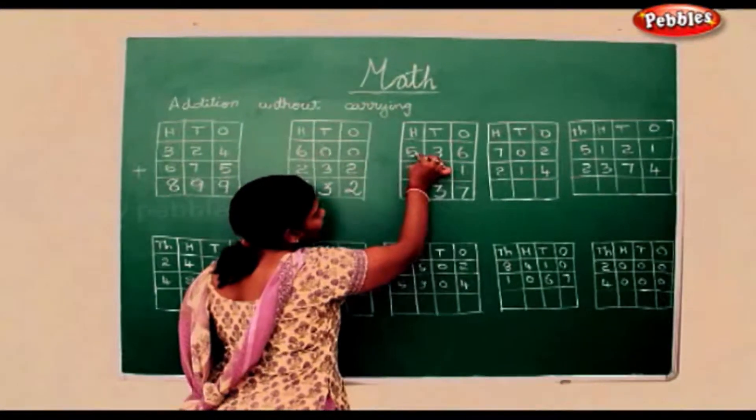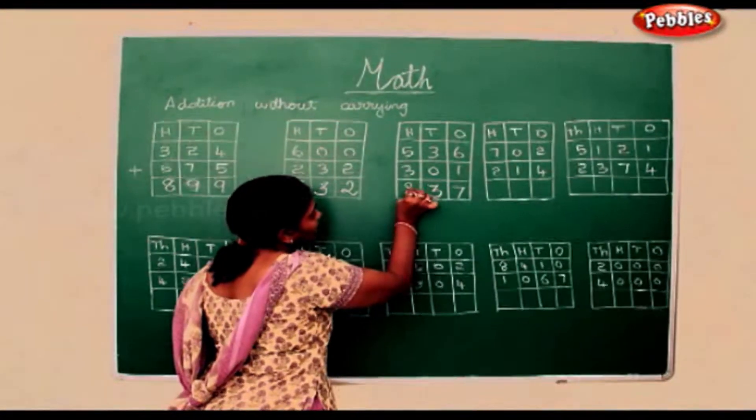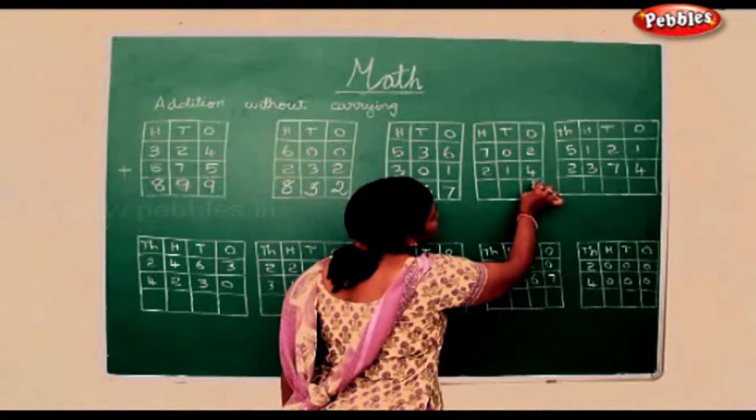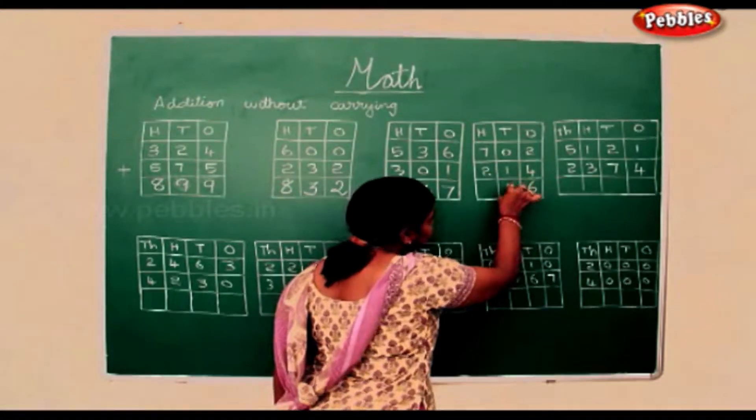5 add 3 is 8, 2 add 4 is 6, 0 add 1 is the number itself, 1.